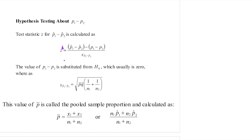The test statistic for p1-hat minus p2-hat is as given here. The test statistic would be p1-hat minus p2-hat, minus p1 minus p2 — this value comes from your null hypothesis, and it's usually zero, but not necessarily always. It depends on your null hypothesis. The denominator is the sample standard deviation of p1-hat minus p2-hat, which equals the square root of p-bar times q-bar, multiplied by 1 over n1 plus 1 over n2.